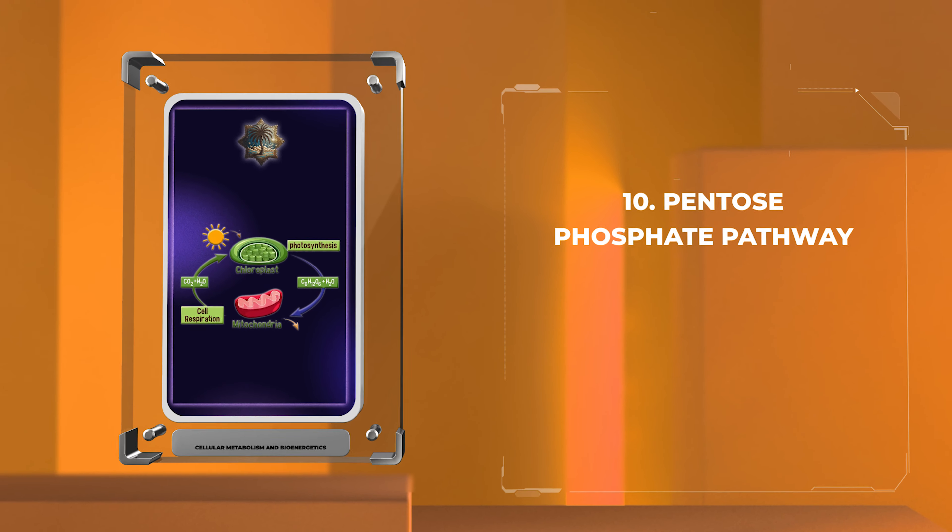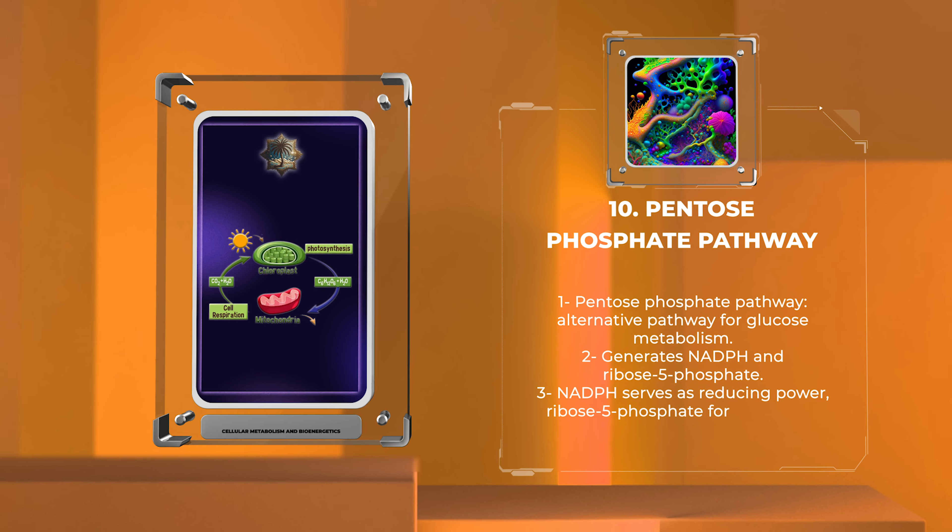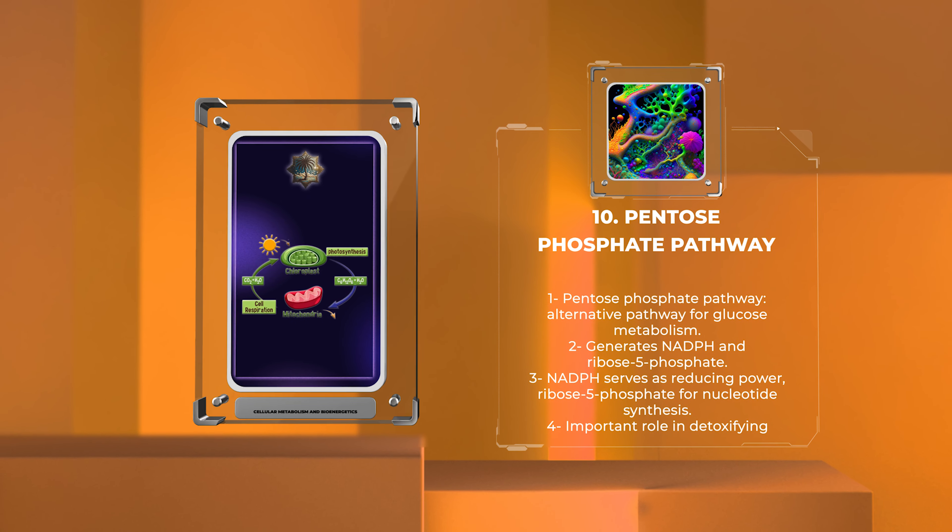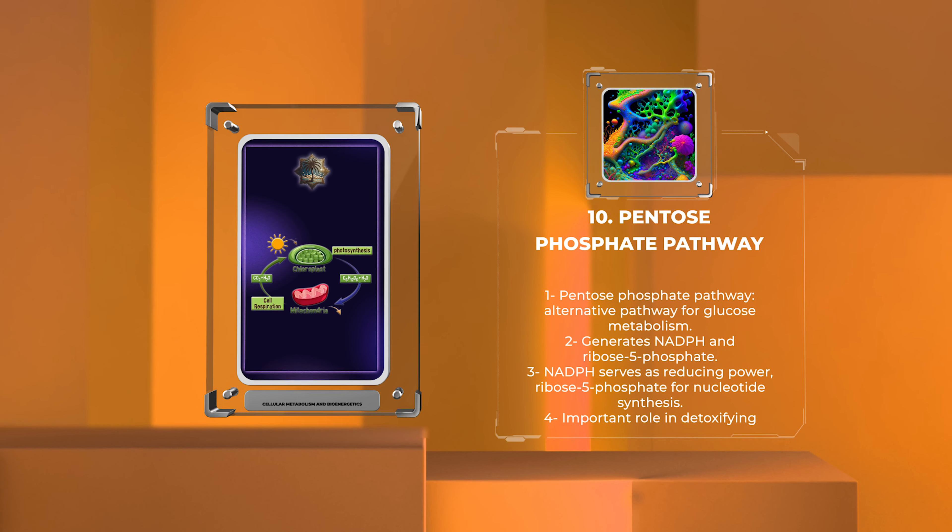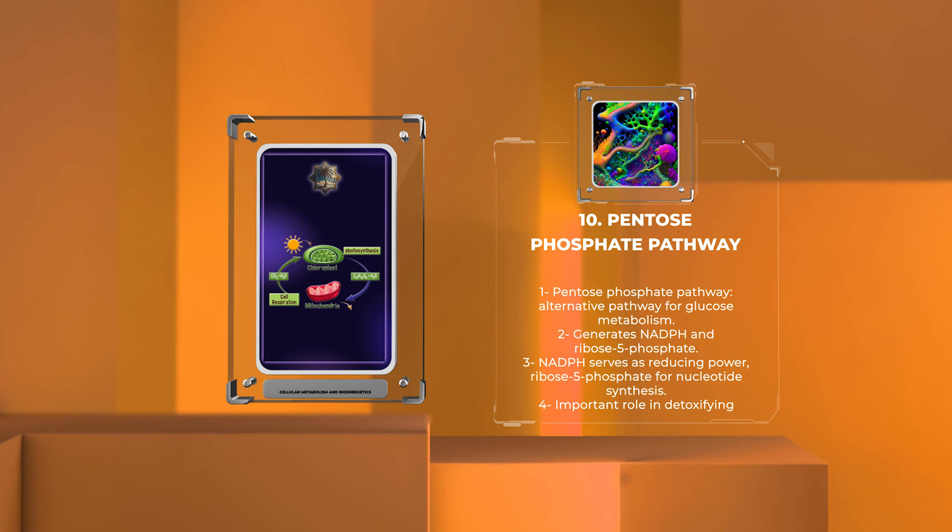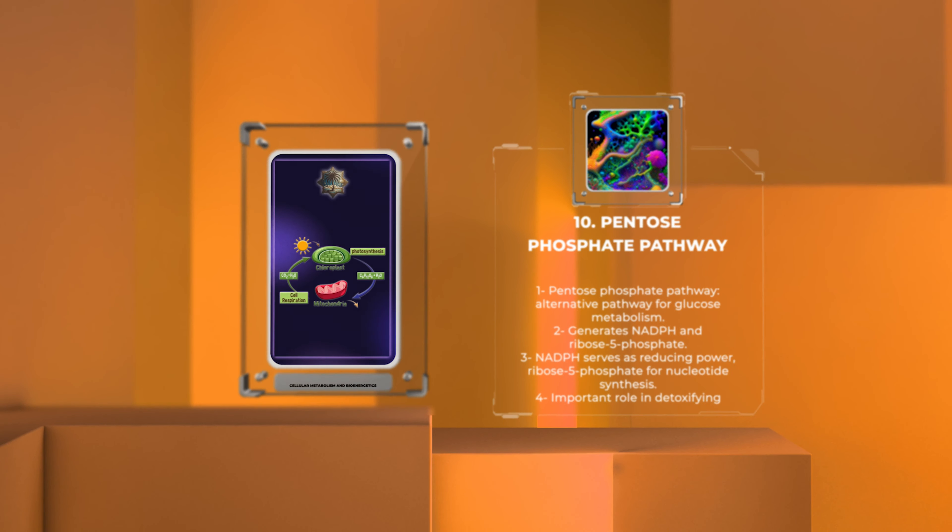The pentose phosphate pathway, also known as the hexose monophosphate shunt, is an alternative pathway for glucose metabolism. It generates reducing power in the form of NADPH and produces ribose-5-phosphate, a precursor for nucleotide synthesis. The pathway also plays a crucial role in detoxifying reactive oxygen species.